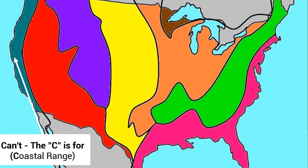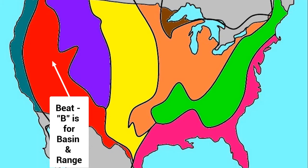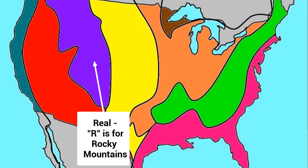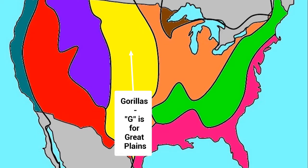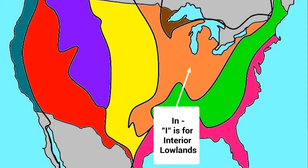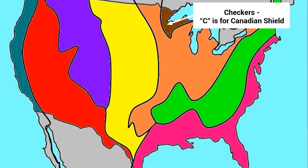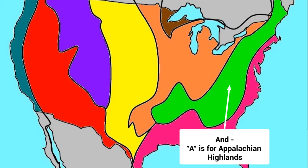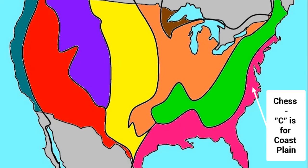The C in 'Can't' is really for the Coastal Range. The B for 'Beat' is for Basin and Range. The R for 'Real' is for the Rocky Mountains. The G for 'Gorillas' is really for the Great Plains. The I for 'In' is Interior Lowlands. C for 'Checkers' is really Canadian Shield. The A for 'And' is really for Appalachian Highlands. And the C for 'Chess' is the Coastal Plain.